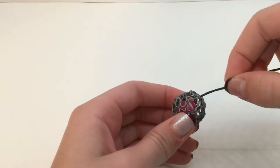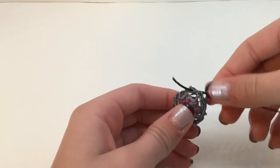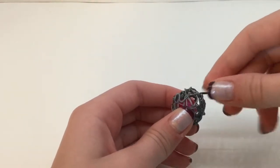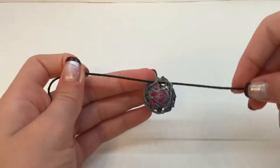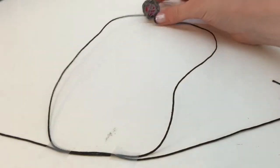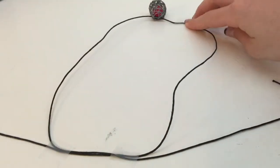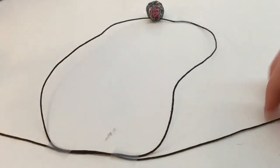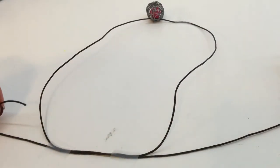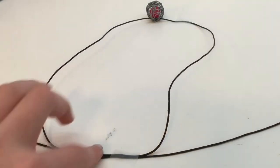For the necklace, put a string through a couple of the openings so it comes in one end and goes out the other. I'm using this black string. You want to set it up so the two ends are wrapped around and it's doubled at the end—one end going one way, the other end going the other way.